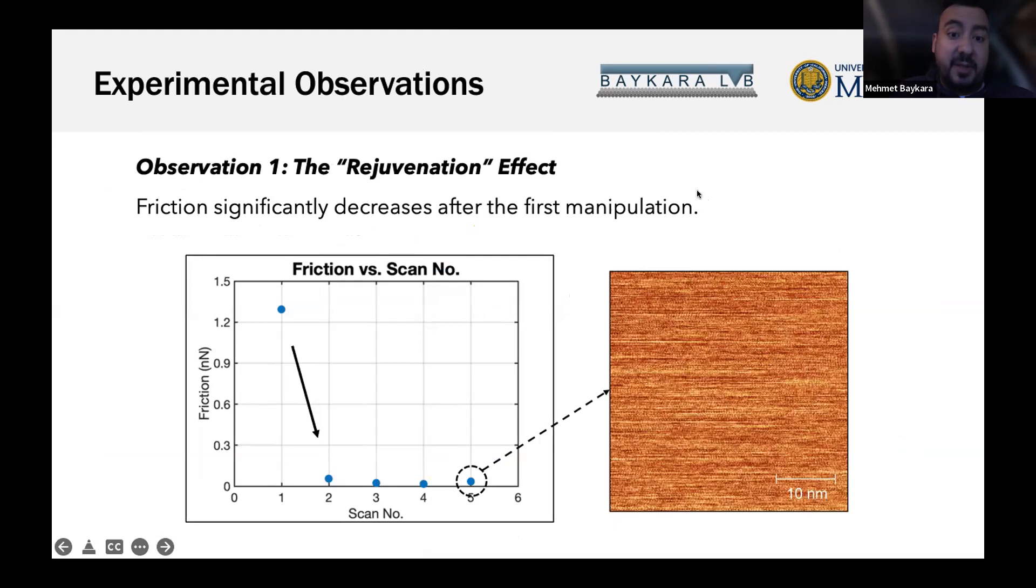Performing tip-on-top measurements, we observe three different effects. The first is the rejuvenation effect. We very often observe that the friction value measured for the first manipulation on a particular island is significantly higher than subsequent manipulations. We scan the island left and right five times, and the first friction value is typically much higher than the others.